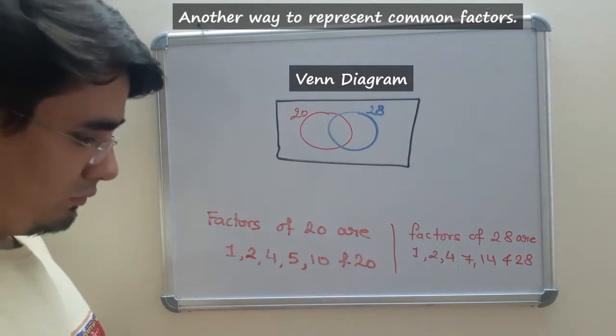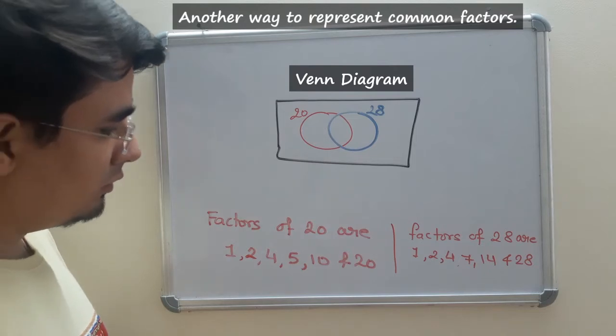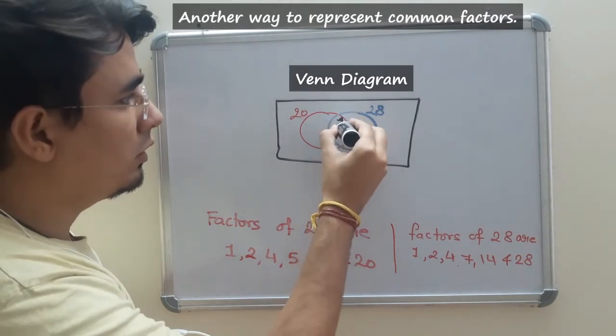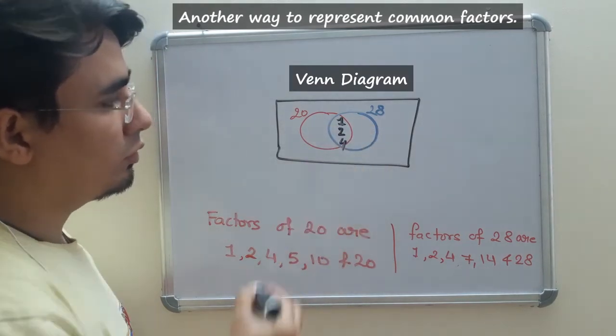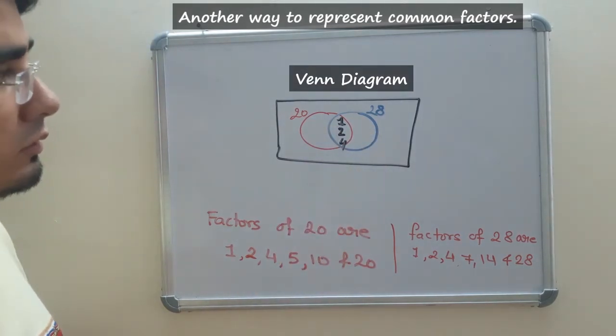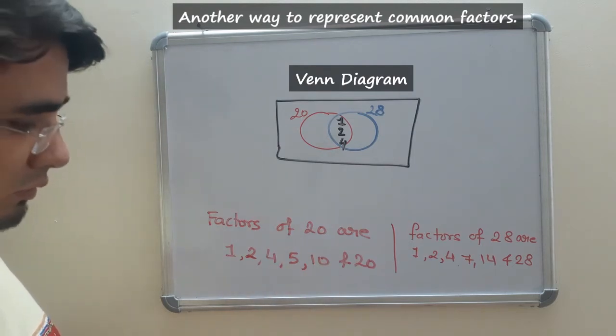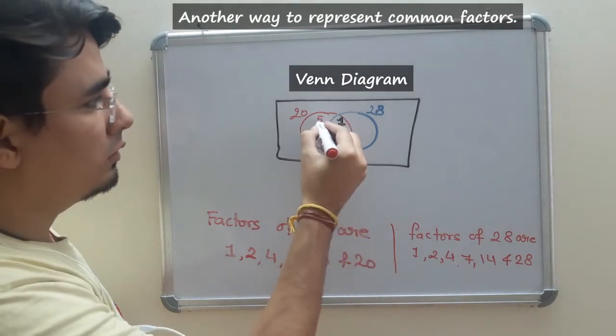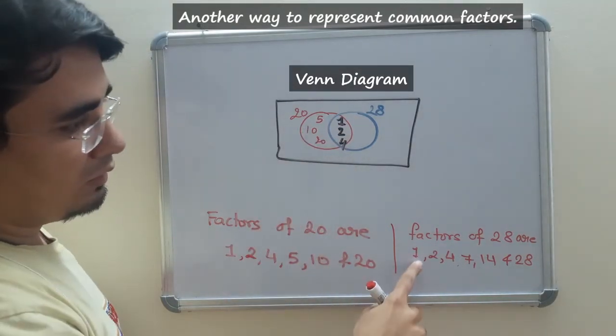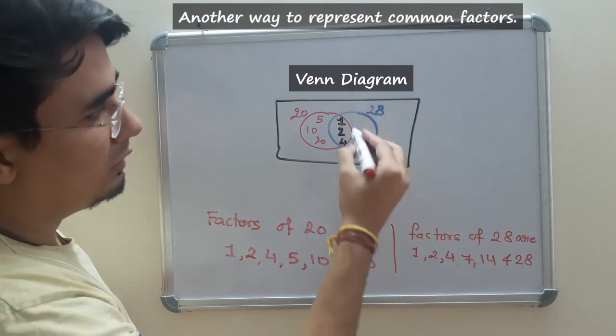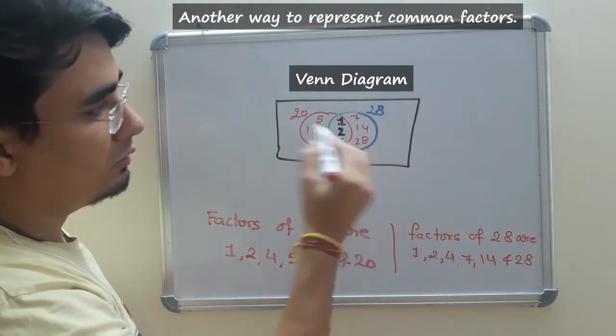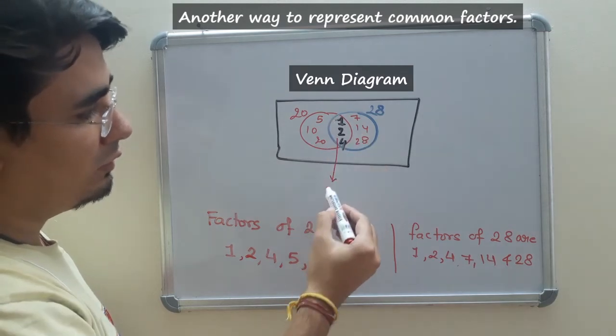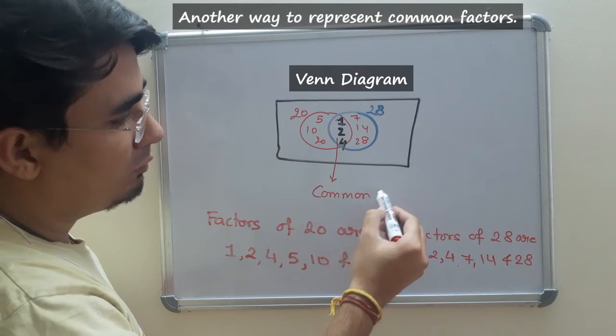So what I can do is write the common factors in the middle, that is 1, 2, and 4. So these are the common factors in both of them. And rest of the factors I can write, 5, 10, and 20 here, and 7, 14, and 28 in this part. So this common part is known as common factors.